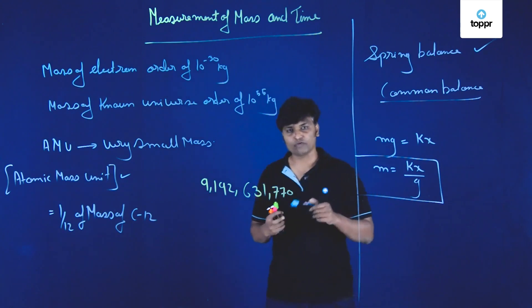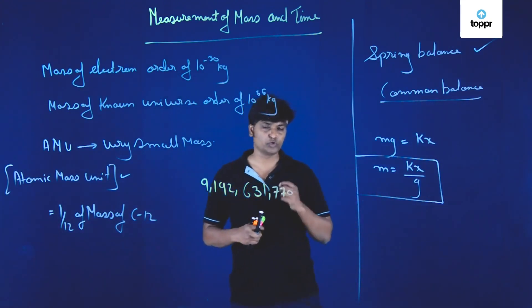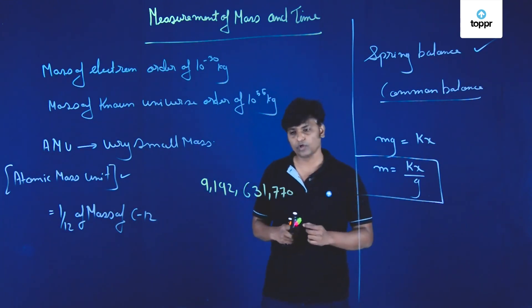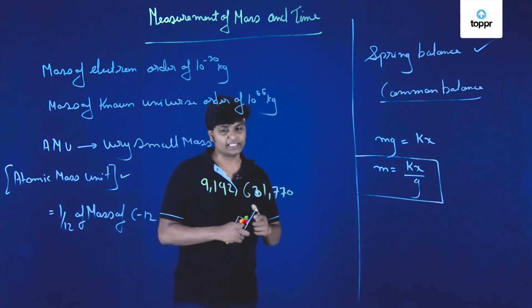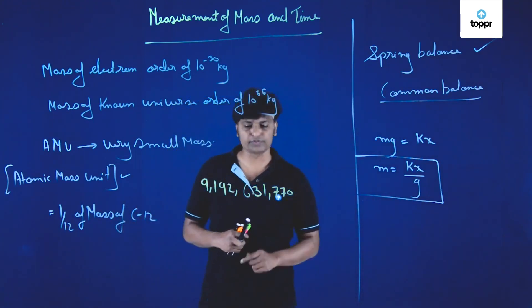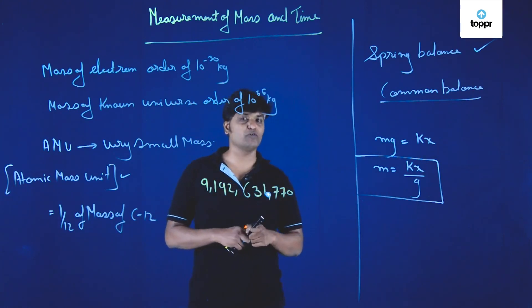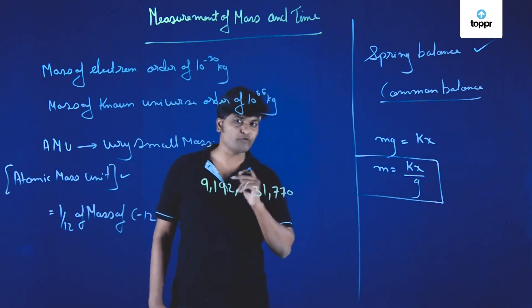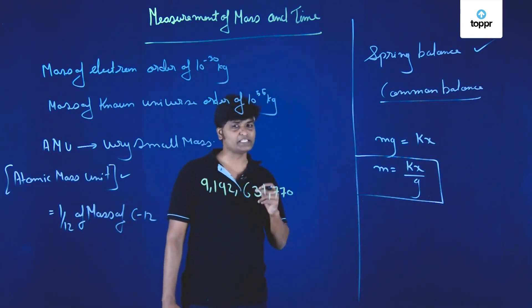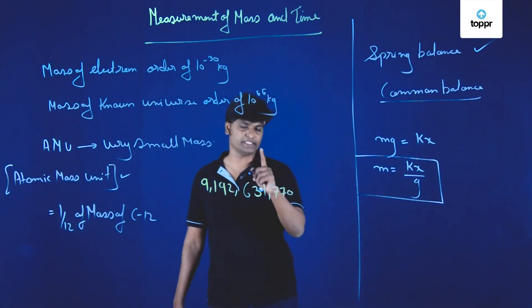However, then after to make time standardized, to consider time in a standardized way, they considered that one second is this many vibrations, one second is this many vibrations of cesium atom.